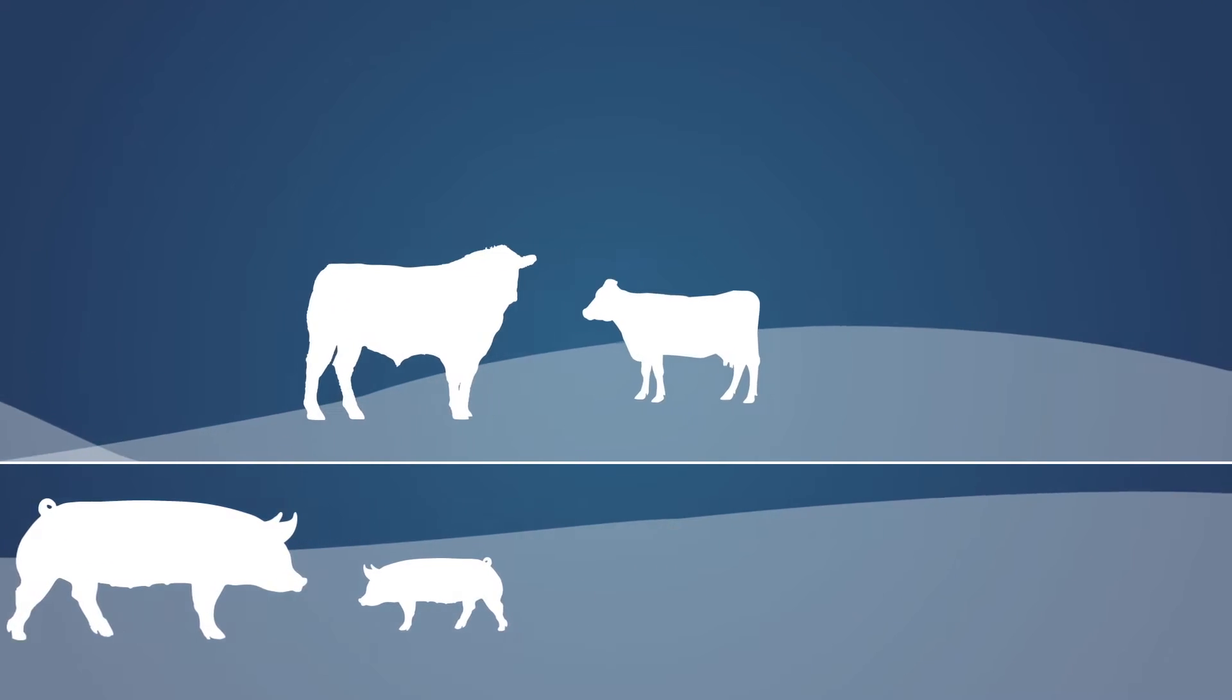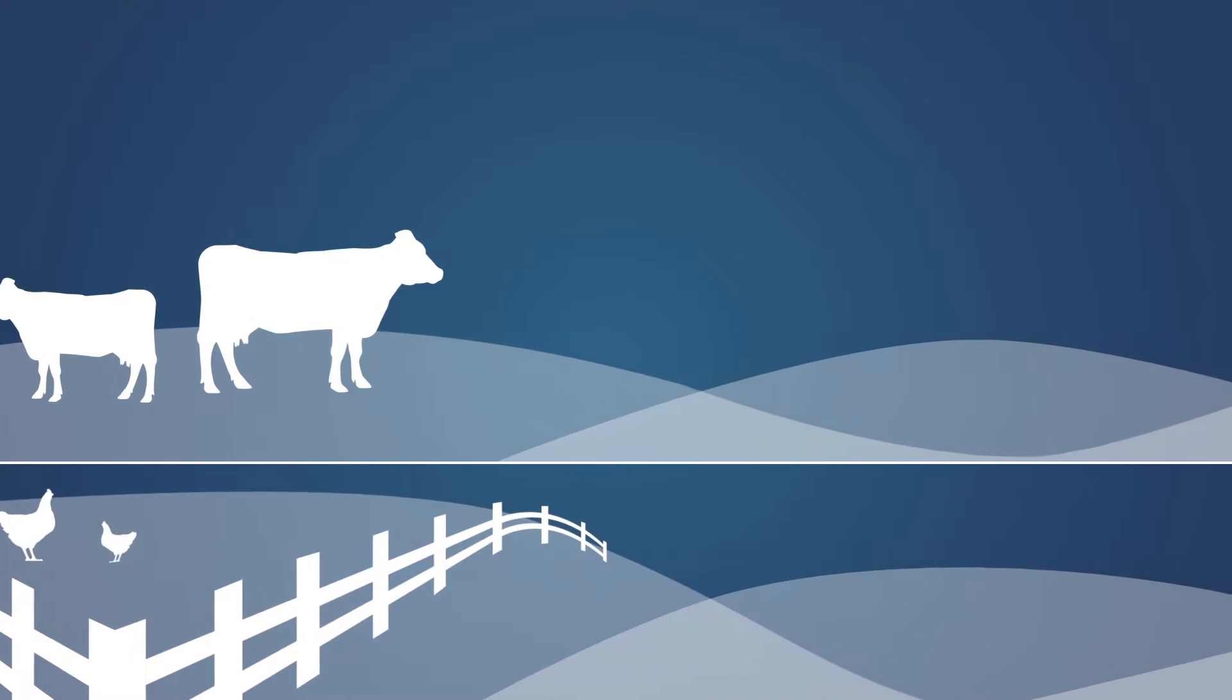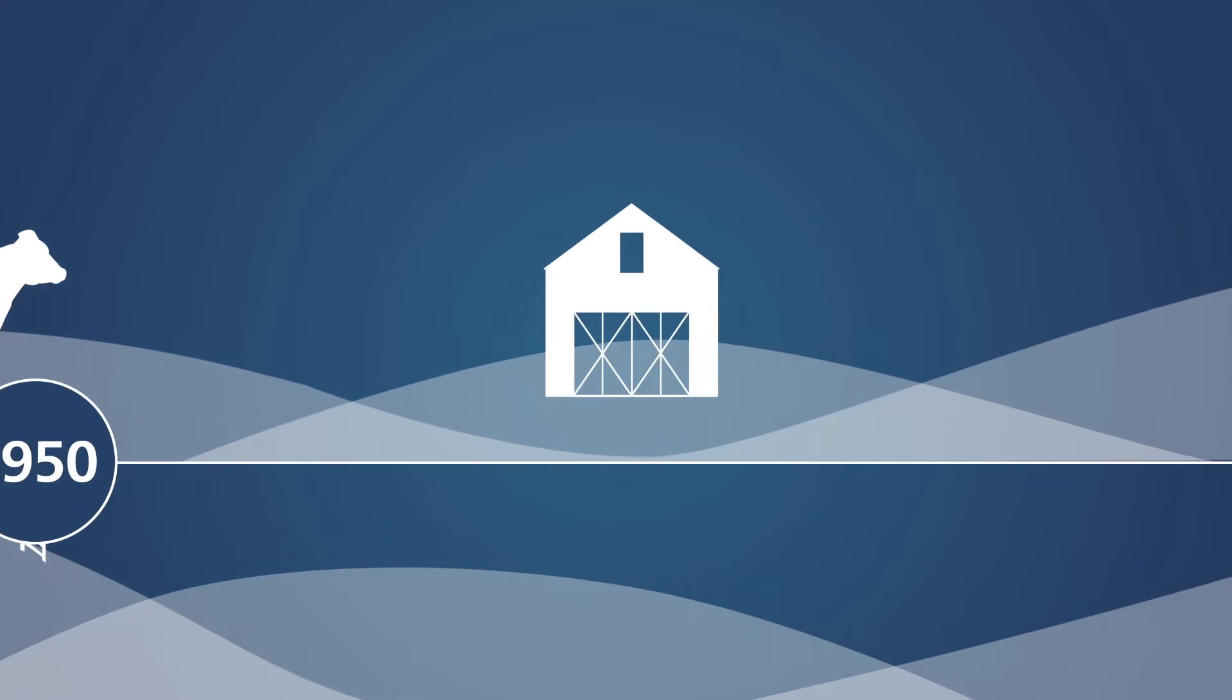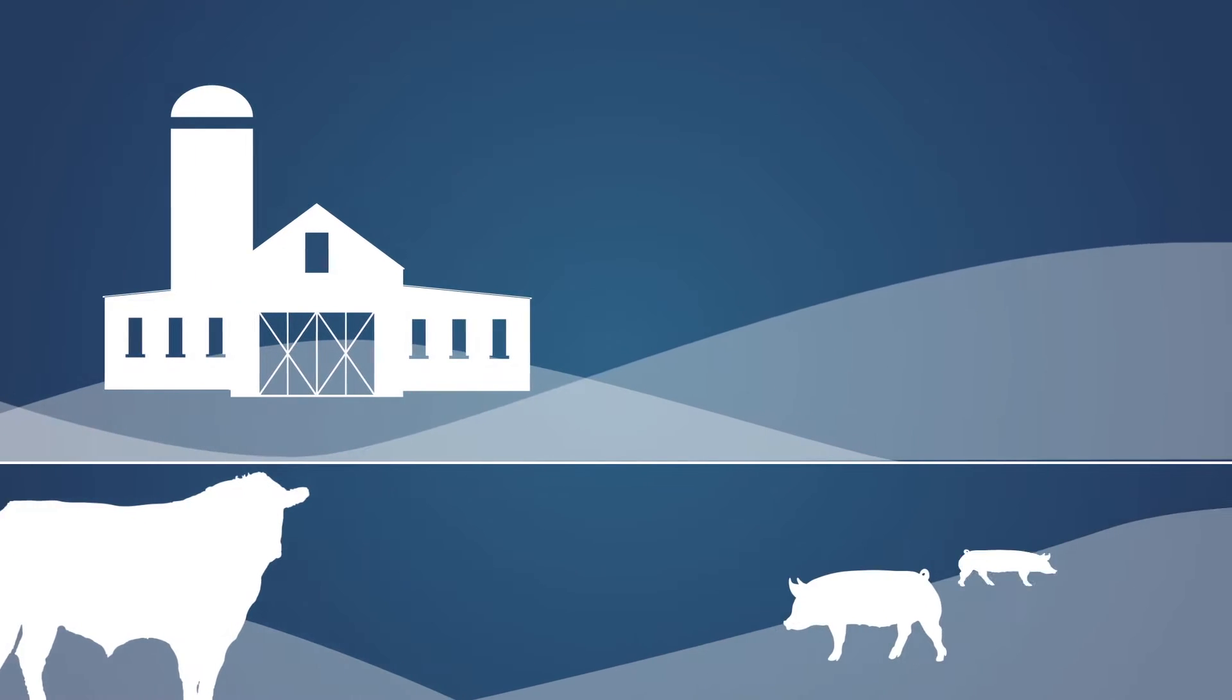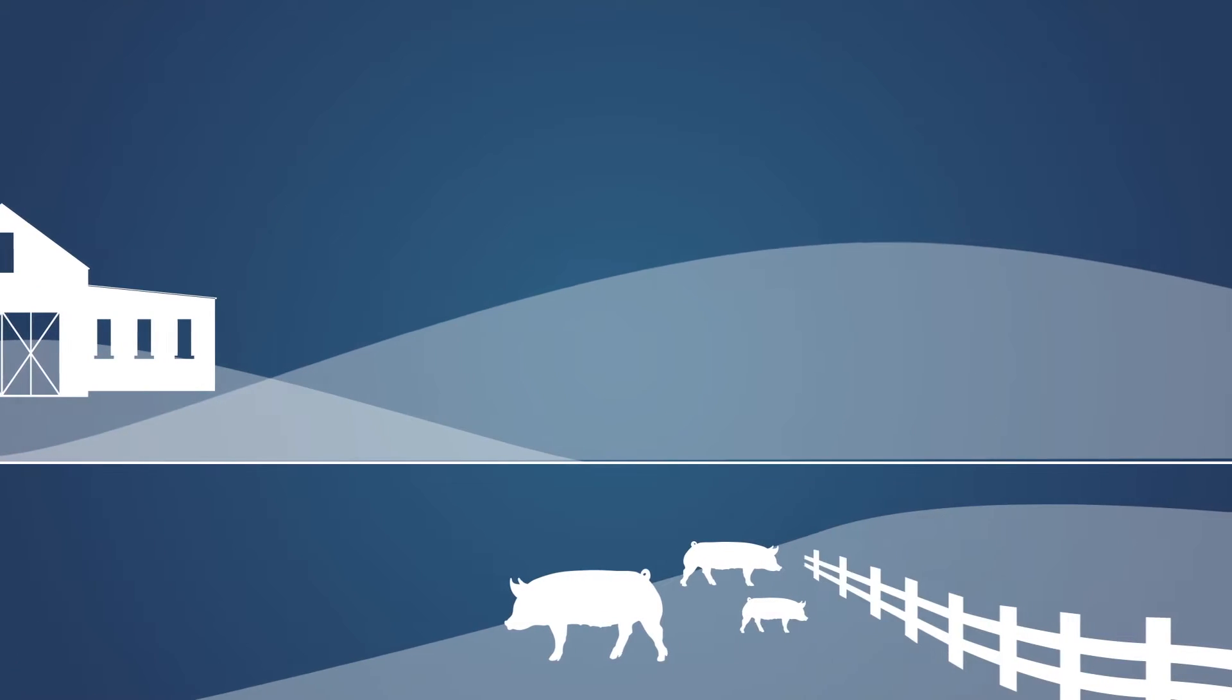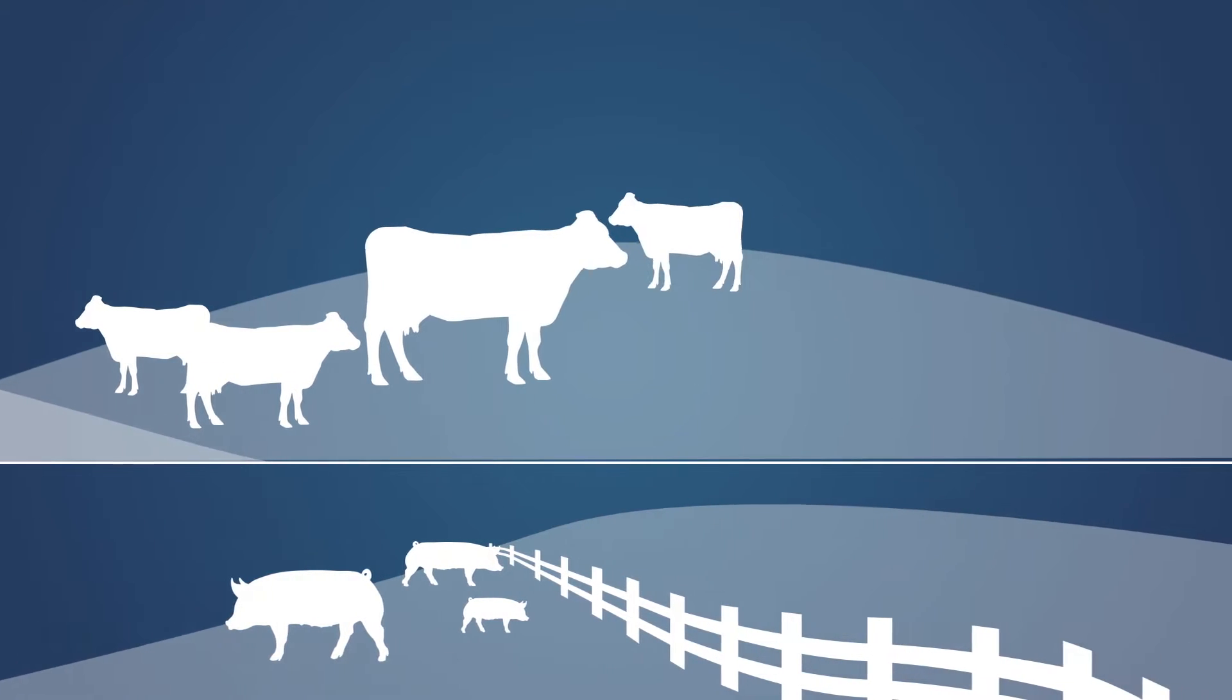With some feed ingredients in short supply, government and farmers urge scientists to help. And in 1950, they have a breakthrough, discovering that animals fed low doses of antibiotics are healthier, live longer, and grow faster.